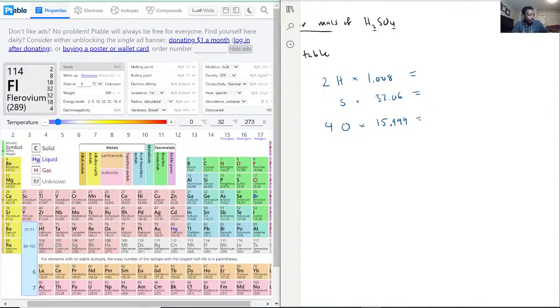So with that, you times 2, which equals 2.016. Okay, 32.06, and now 15.999 times 4, equals 63.996.